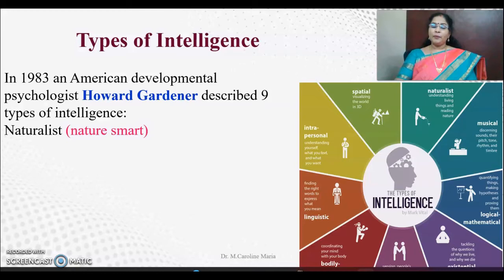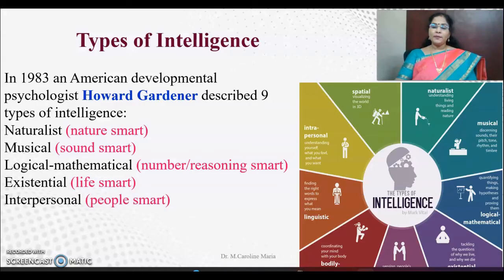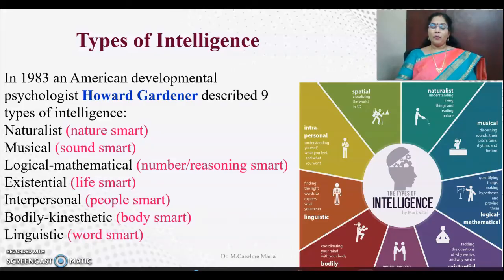The eight intelligences Gardner proposed are: naturalistic intelligence — people who are smart in nature-related activities; musical intelligence — those who are good at music; logical-mathematical — those who are good at numbers and reasoning; existential intelligence — recently introduced, people who are life smart; interpersonal intelligence — people who are people smart; bodily-kinesthetic — body smart; linguistic — word smart; and intrapersonal — self smart people.